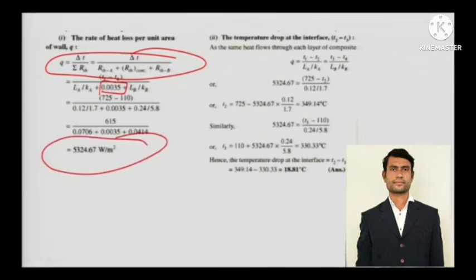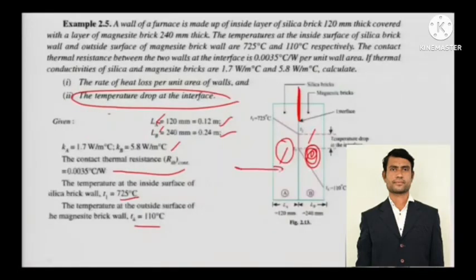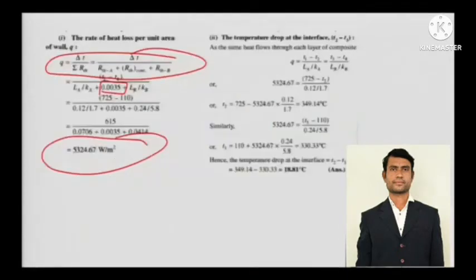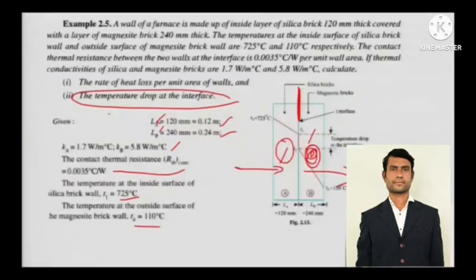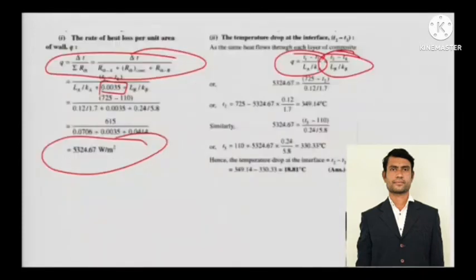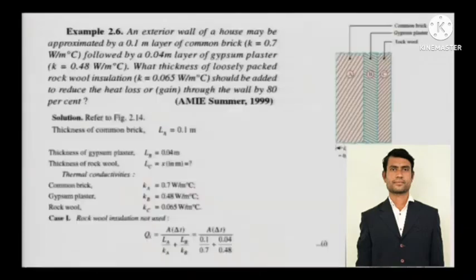For the temperature drop at the interface: since heat transfer is steady, the heat coming in will go out with the same magnitude. So it is (T1 minus T2) divided by (LA/KA), and (T3 minus T4) divided by (LB/KB). The contact temperature at the interface can be calculated with simple mathematics.